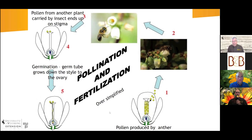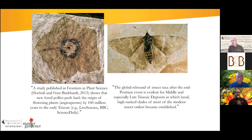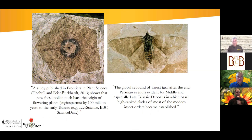Pollination is basically the sexual reproduction of plants, and various plants have different methods. Today we'll concentrate on the physical transfer using insects. There's a lot of variation because this has been going on for such a long time, and various specializations have developed.